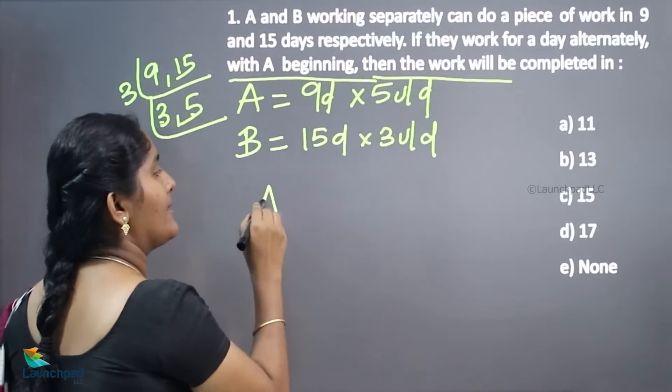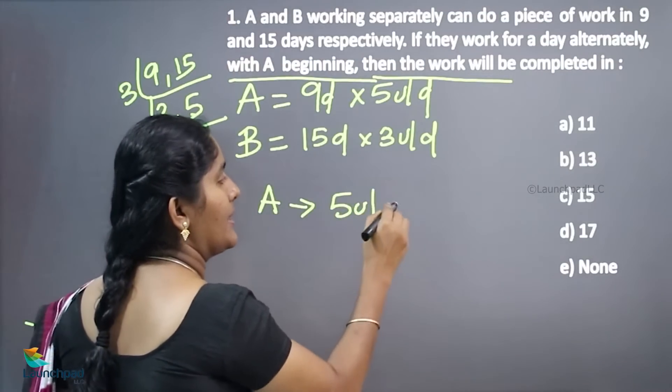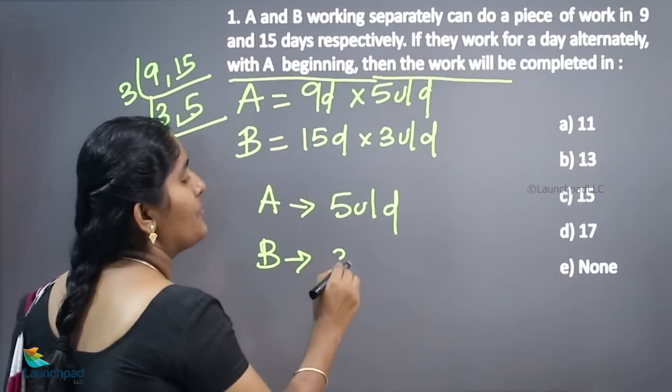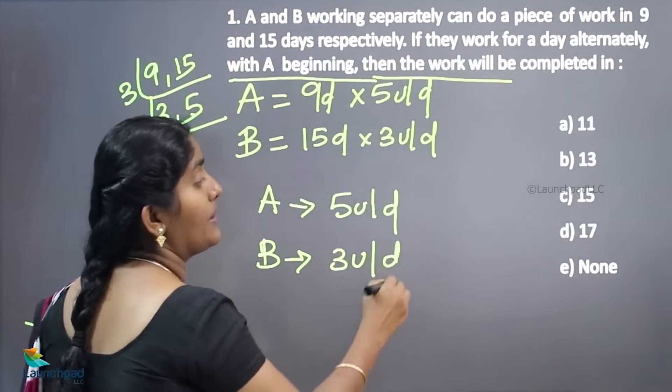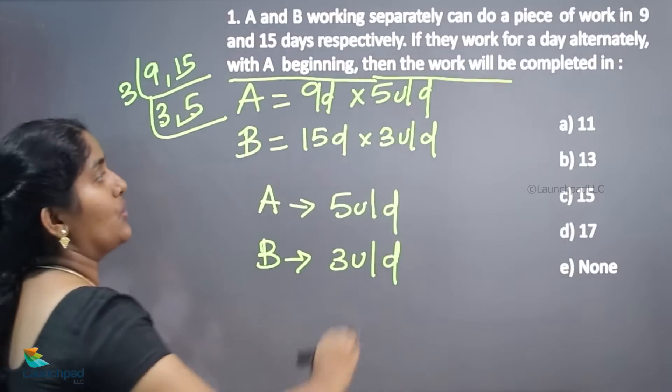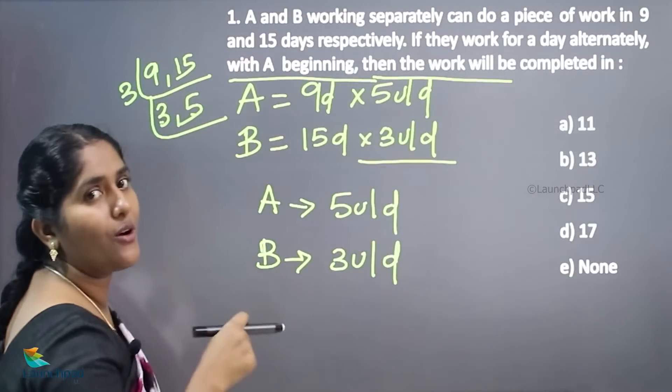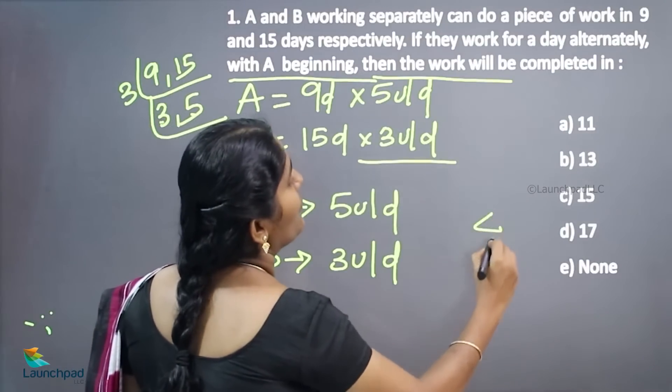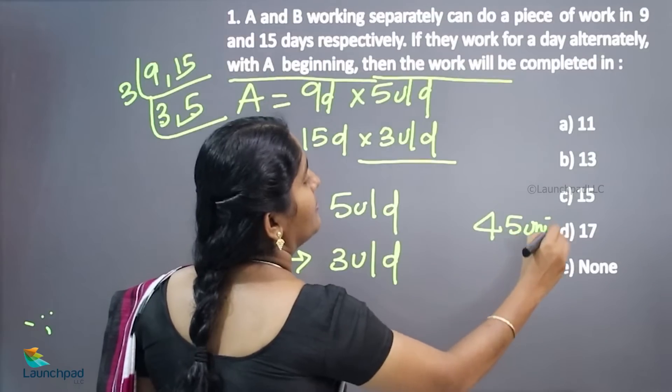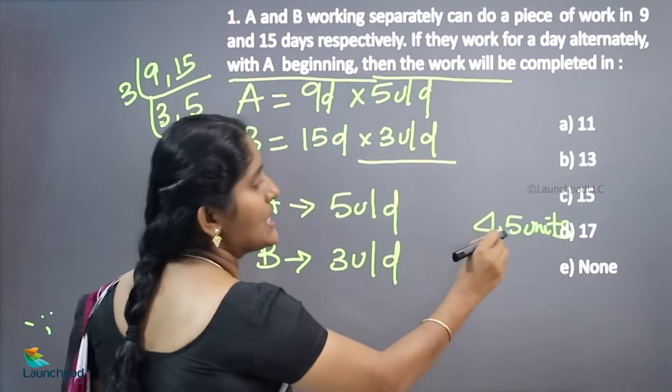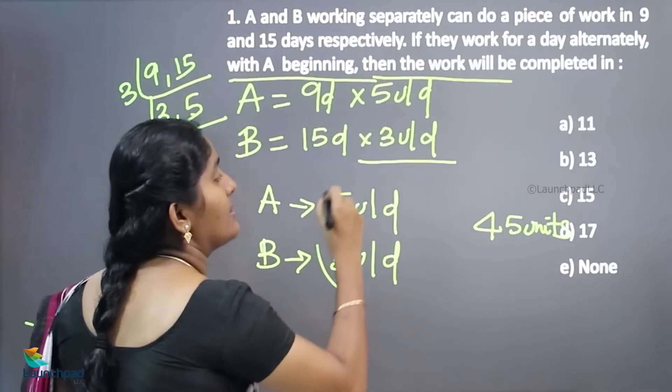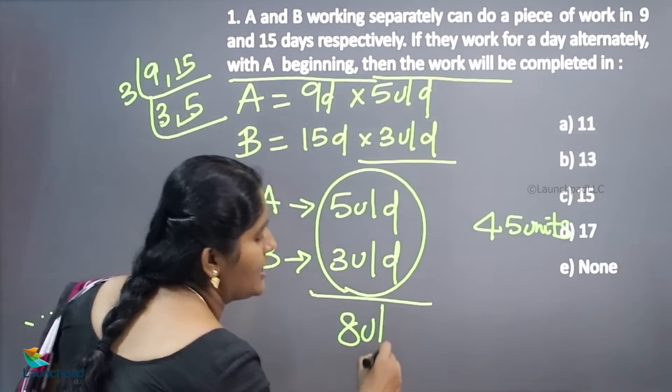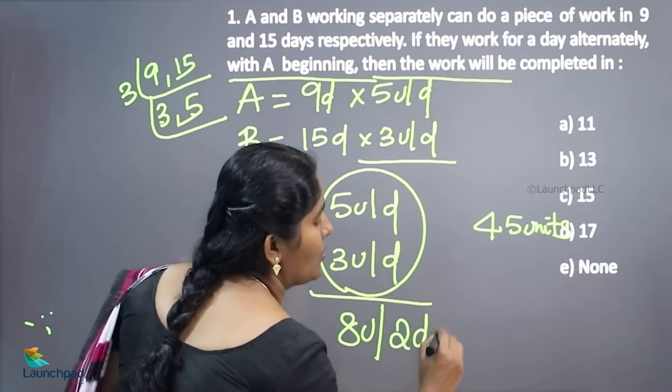Now A started the work at 5 units per day. Next day B can do the job, able to complete 3 units per day. Now don't add this because they are working alternately. Totally there are 45 units. In this 45, how many 8s are there? You can consider 8 units. This 8 units is 2 days work unit.